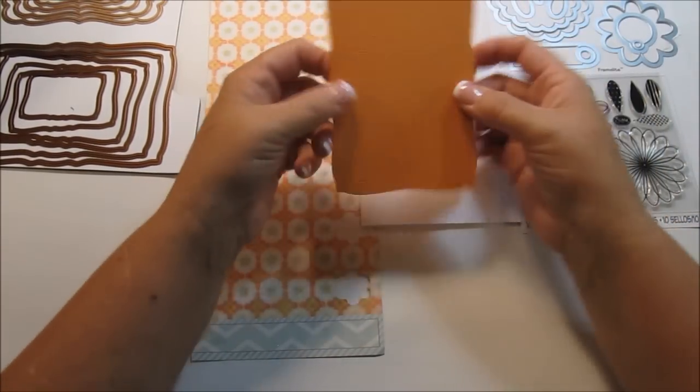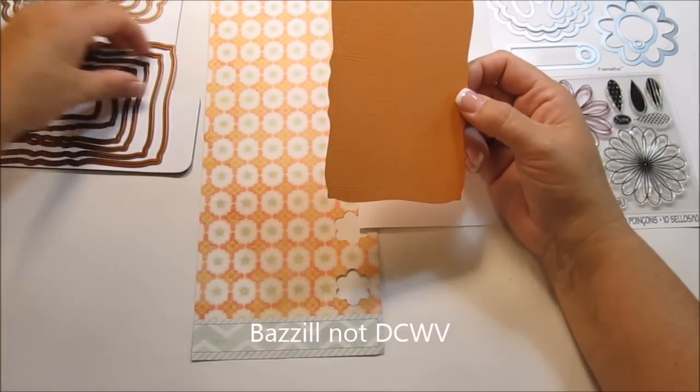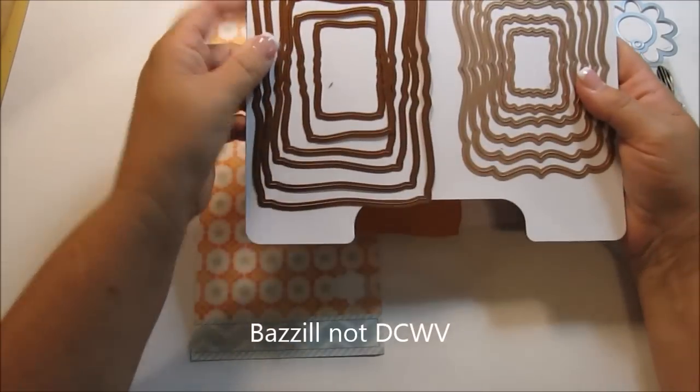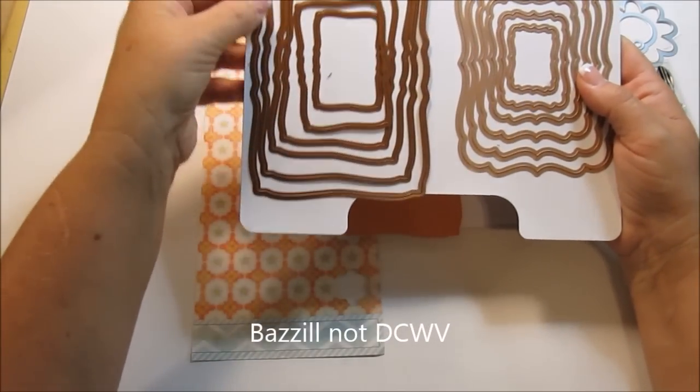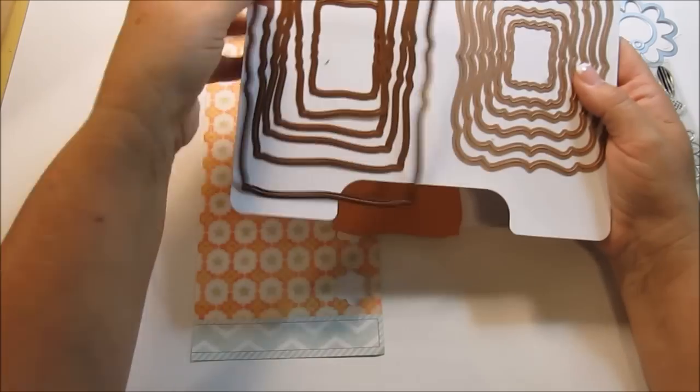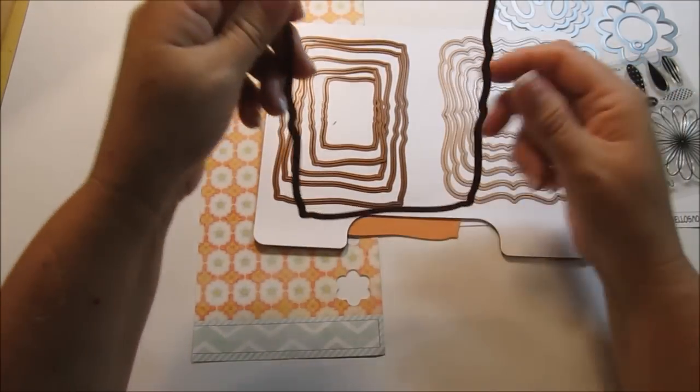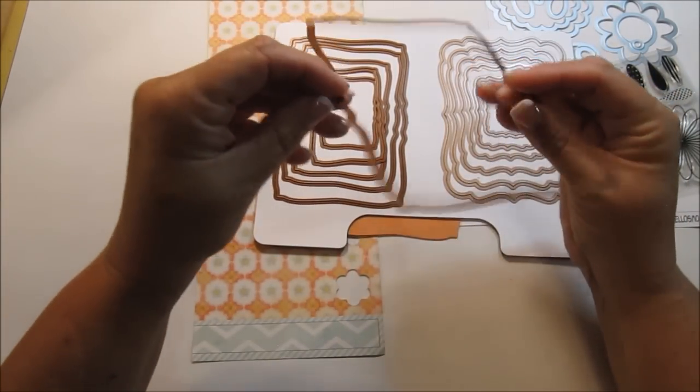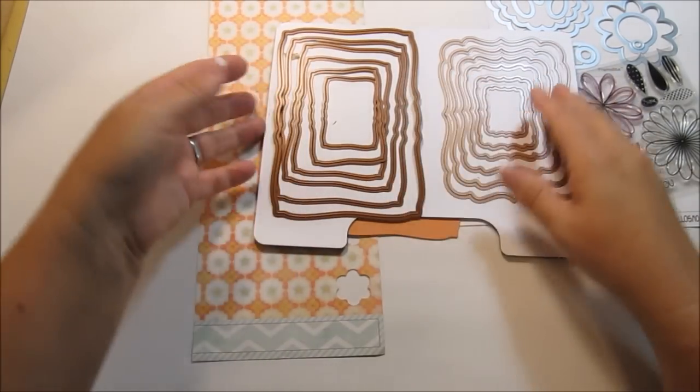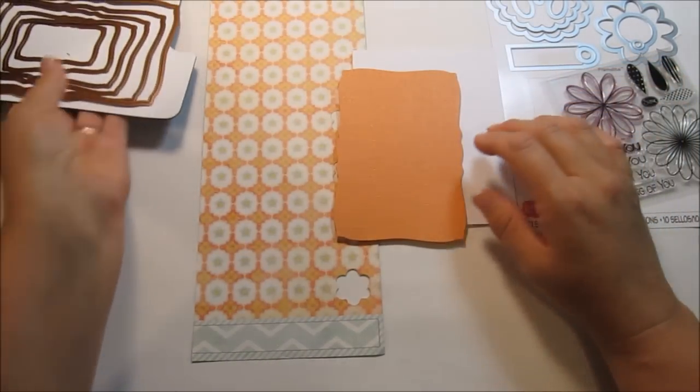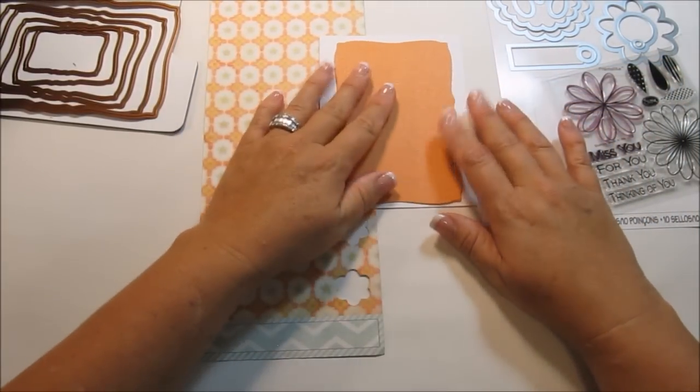All right, so this die cuts with a view and I used the Spellbinders die, this one here, the second one in from the largest. This one here is really nice if you're needing photo mats for a layout because it's a six by four and then it trickles down about a quarter inch in size, so we're going to put that one here.